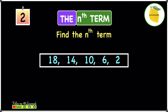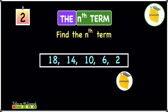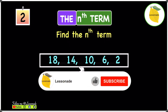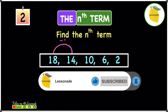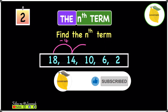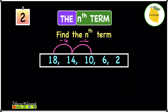Now let's find the nth term for a second linear sequence: 18, 14, 10, 6, and 2. Let's first see how much the sequence is decreasing by. To get from 18 to 14 you take away 4, from 14 to 10 take away 4, from 10 to 6 take away 4, and from 6 to 2 take away 4. So the sequence is progressing by subtracting 4 each time.